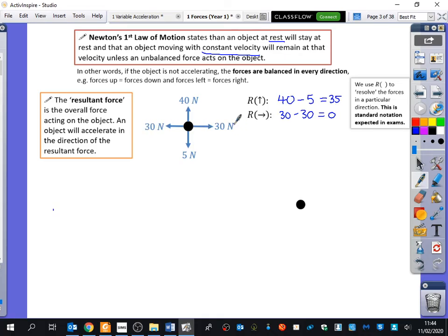Left and right, though, the overall force is 0, because you've got 30 minus 30, if we're looking at it to the right, which is just 0. So in the left and right direction, the forces are completely balanced. What I'm going to do with this second diagram is I'm now going to draw on the resultant force to try and predict what will happen. So there is no resultant force left and right. But when I do the 40 take away 5, overall, it has an upwards force of 35. So the particle will accelerate upwards.